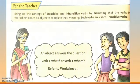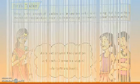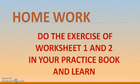To summarize: verbs in Worksheet 1 need an object to complete their meaning — such verbs are called transitive verbs. An object answers the question 'verb + what?' or 'verb + whom?' If you get the answer of 'what' or 'whom' from a sentence, that is a transitive verb. Intransitive verbs do not require an object after the verb. Homework: do the exercises of Worksheet 1 and 2 in your practice book, and watch this video again and again to understand transitive and intransitive verbs. Thank you. Bye-bye.